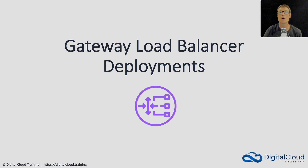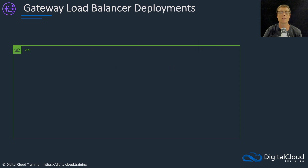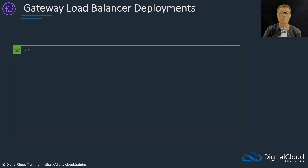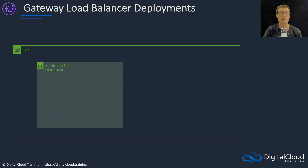Hi guys, in this lesson I'm going to cover the deployment of gateway load balancers. You'll remember that when we talked about the different types of load balancer that are available, there's one called a gateway load balancer. You use the gateway load balancer when you want to load balance connection requests to backend instances that are running IDS software, IPS software, or next generation firewalls. So let's have a look at how we can deploy a gateway load balancer.